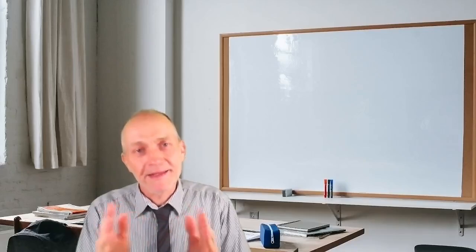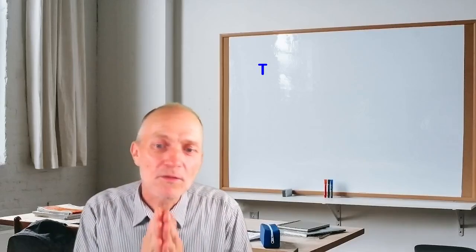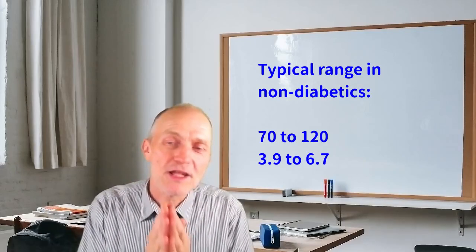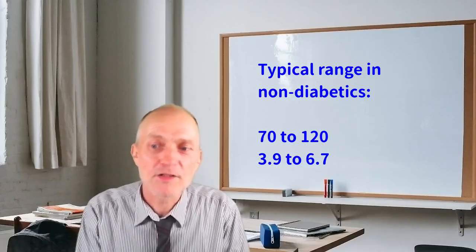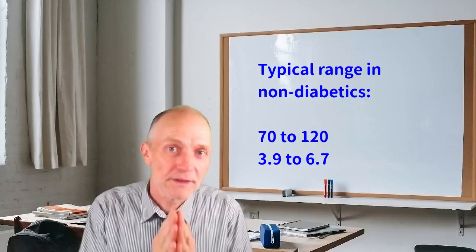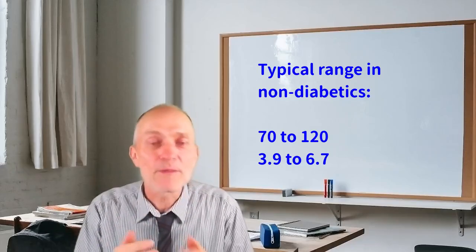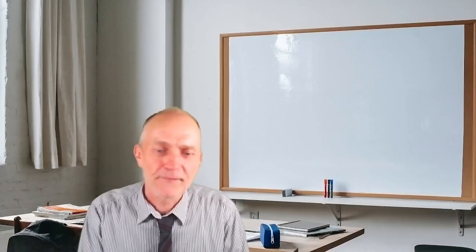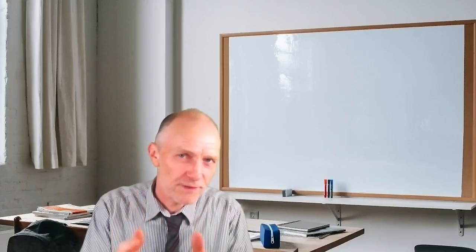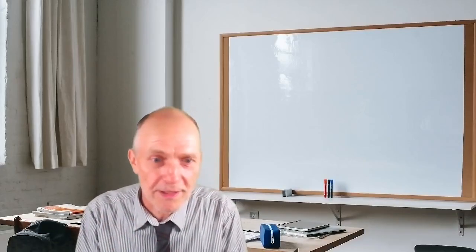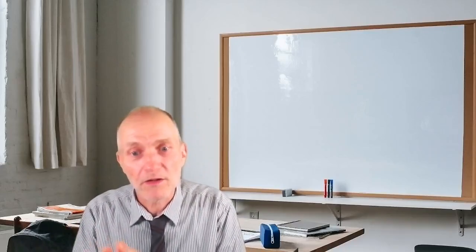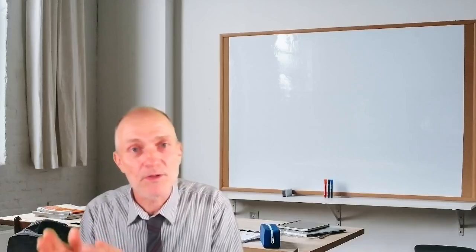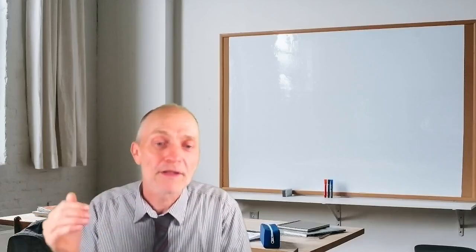This suggests that in this specific study, the normal glucose range is somewhere between 70 and 120 mg per deciliter, or between 3.9 and 6.7. And sometimes, values between 60 and 70, so that is between 3.3 and 3.9 on the low side, and between 120 and 140 on the high side, that is between 6.9 and 7.8, occurred as well.